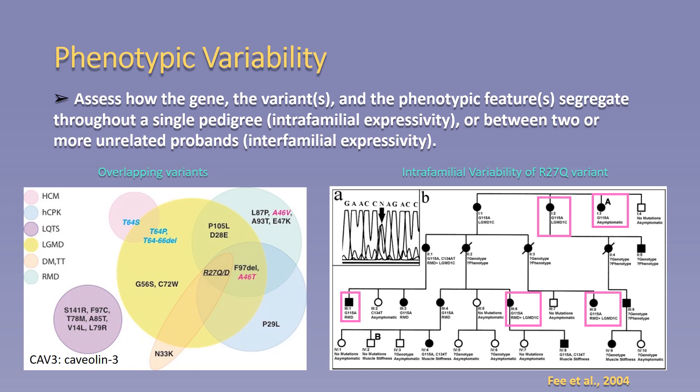We also find phenotypic variability among individuals harboring the same genetic variant within the same family, as indicated by the pedigree on the right. This would indicate that we should lump the five disease entities into one broader entity for the curation of CAV3. Of note, the image on the left shows that there are variants that are distinct and associated specifically with the phenotype Long QT syndrome for CAV3—the purple bubble in the left figure. This indicates that Long QT syndrome would not be lumped with the other five entities and would rather represent a second split curation for CAV3.